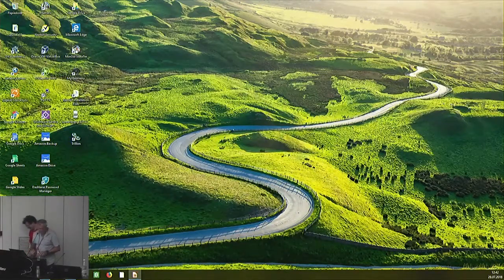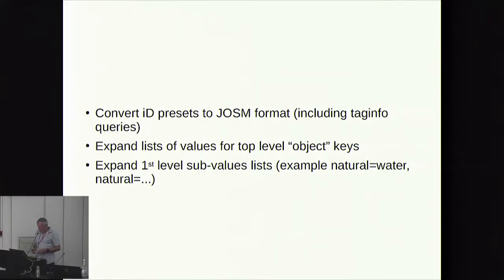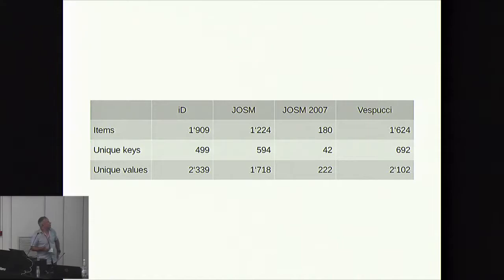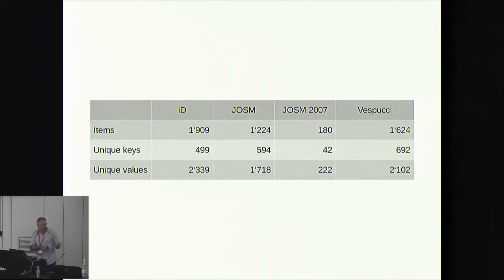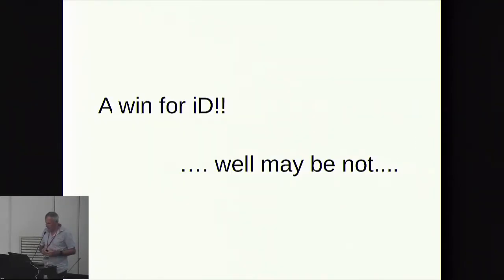What I did was expand the top-level object keys and then expand the first-level sub-level keys. For example, for 'natural=water', I would expand the water values. The result: iD has roughly 2,000 items, JOSM a bit behind that. Running the same program on JOSM presets from 2007 gave me 180 items. Vespucci is a bit better than JOSM, but that's no surprise because I put quite a lot of work into it. So that's a win for iD — well, maybe not.